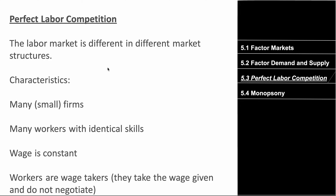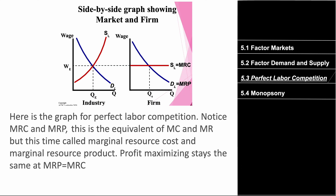So now we have different types of firms in the factor market. We'll cover two: perfect labor competition and monopsony. Perfect labor competition is similar to perfect competition, but for labor. There are many small firms and many workers with identical skills. Wage is constant and workers are wage takers, which means they take the wage from the market and do not negotiate — this is because everyone is paid the same. No firm is going to pay you more because all workers have identical skills.